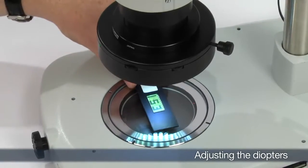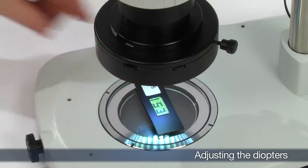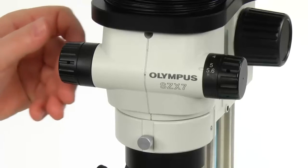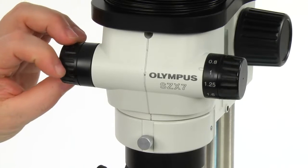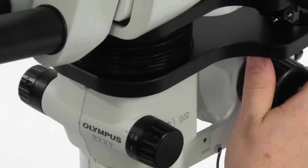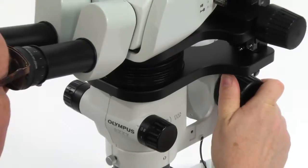First, place a simple large sample that will be easy to observe on the stage plate. Set the zoom adjustment knob for the lowest magnification and rotate the focus adjustment knob to bring the sample into focus.